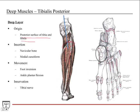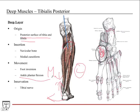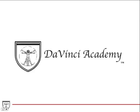Tibialis posterior originates from the posterior surface of the tibia and fibula — a broad origin — comes down, wraps around the ankle, and attaches to the navicular bone, cuneiform, and plantar surface of the foot. Its movement is foot inversion: contracting pulls the foot so the sole points medially. It also crosses the ankle joint so it helps with ankle plantar flexion. Innervation is the tibial nerve. That wraps up osteology and muscles in the leg region; next we'll cover blood vessels, nerves, and clinical pearls.